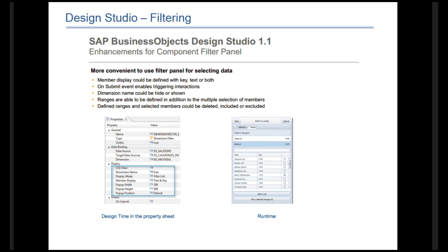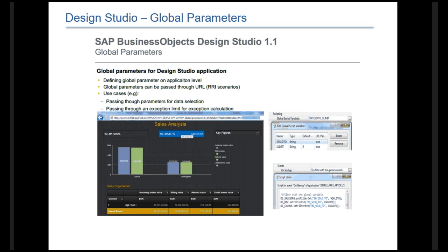The filtering panel — for those who have used Design Studio before, it could have been a little cumbersome. It has been improved so that submit events can now trigger events as opposed to just changes in data. Dimension names can be shown by their keys, their names, or their values, and ranges can be added to include multiple selections as well.